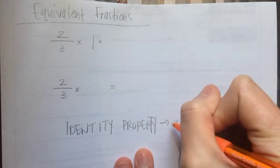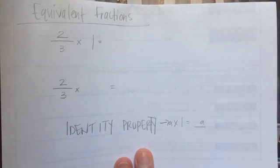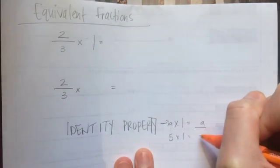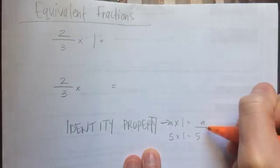The identity property says that anything times 1 is going to be equal to whatever that number is. So if it was, let's just say a times 1 is a, if we're talking about it in algebraic terms. If I plugged in 5 here, 5 times 1 is going to be 5. If I plug in 7, 7 times 1 is going to be 7.